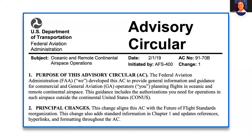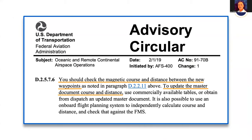Returning to Advisory Circular 91-70B, Appendix D provides the regulatory basis. It states that you should check the mag course and distance between the new waypoints to update the master document course and distance — that's literally what I just showed you. We are instructed that this is a required step in our re-clearance process.